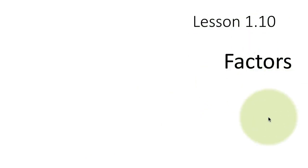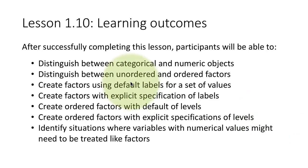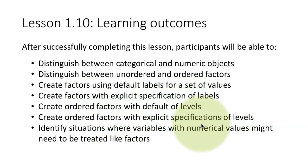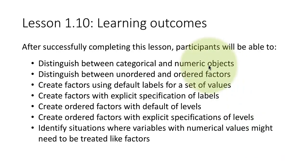In R, categorical variables are called factors. So at the end of this lesson, you'll be able to distinguish between categorical and numeric variables, and there's also the important distinction between unordered categorical variables, or unordered factors, and ordered factors. You'll see how categorical variables can be created with default labels, and how you can change those default labels to more friendly ones. We'll also create ordered factors with explicit and implicit levels, and identify situations where variables with numerical values should actually be treated as categorical variables.